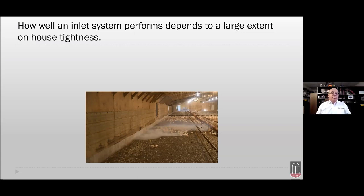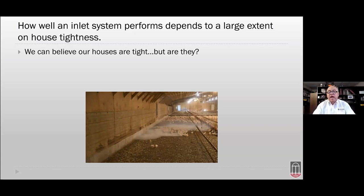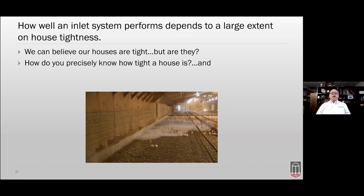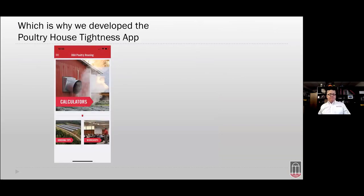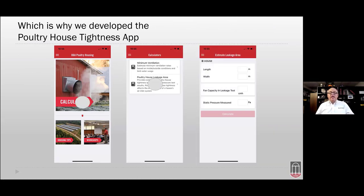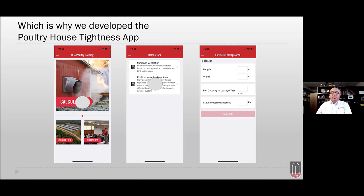The less we do a good job of heating incoming air, the more air it takes to remove litter moisture. We may believe our houses are tight, but how do we precisely know? How does a specific level of house tightness correlate with inlet system effectiveness? We have an app for that too — in the same Poultry 411 app, hit Calculators then House Leakage Area Calculator. This calculates how much leakage a house has and how that leakage affects the inlet system.